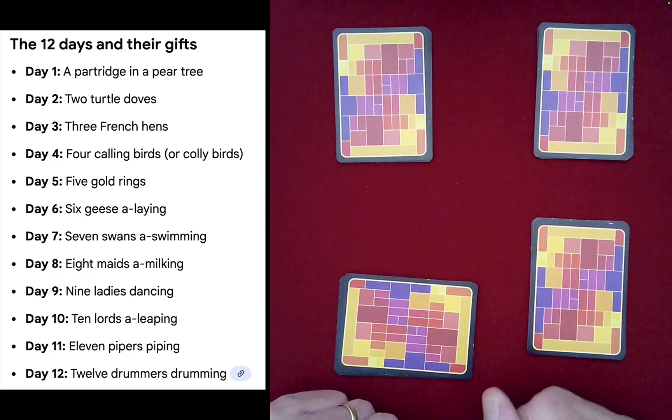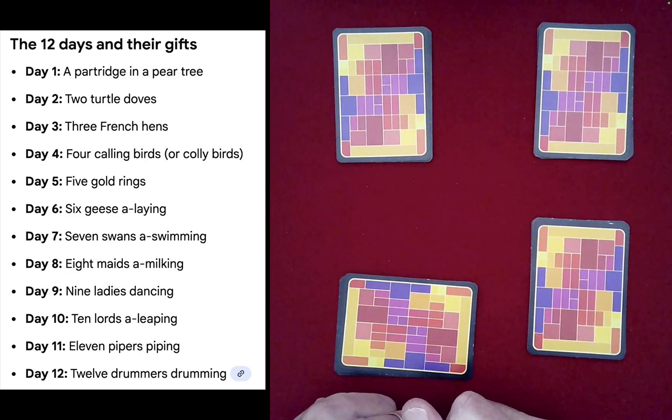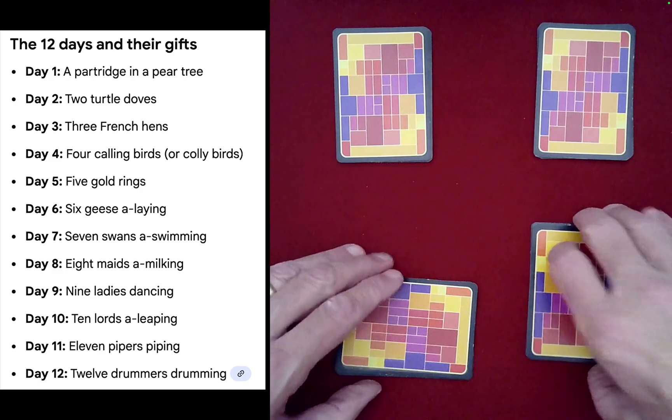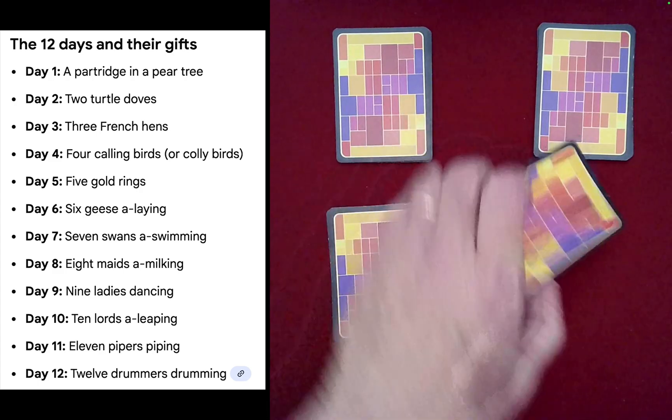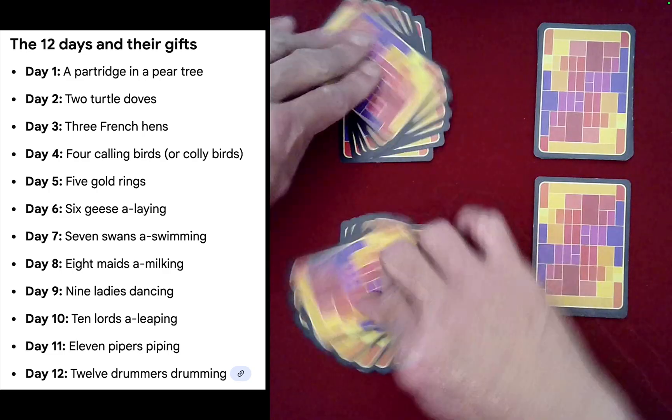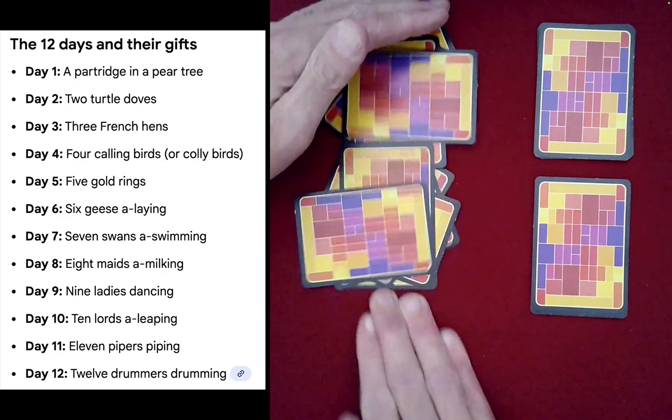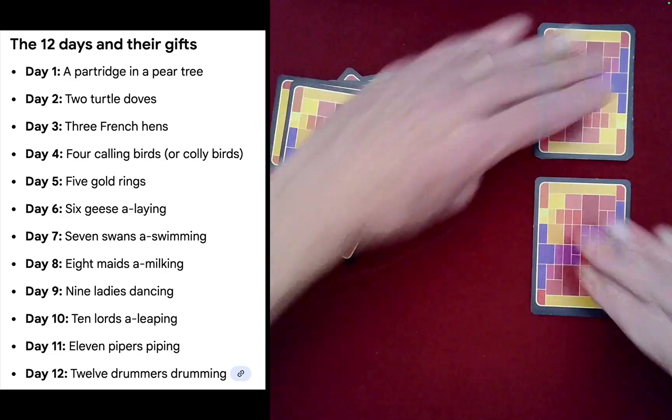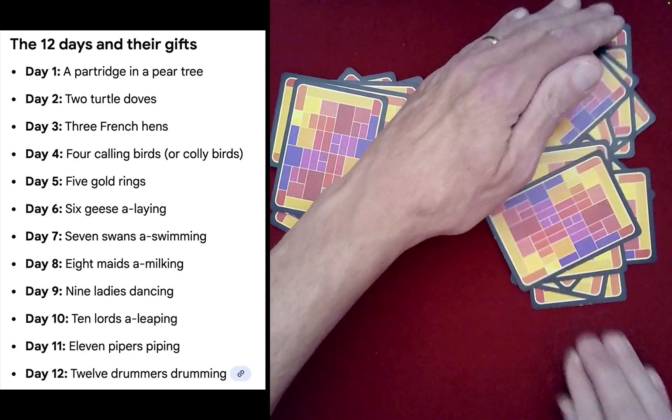Spectator B, which one would you like to keep for yourself? Top one? Okay, so that means this one goes over here and then this is for spectator B. And then to finish, why don't we go ahead and just do a final rosette shuffle.